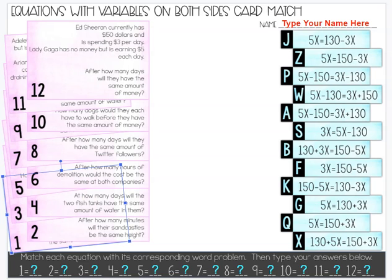Today you'll be doing a digital equations with variables on both sides card match. To do this activity, you first need to enter your name here, and then you will start with card number one.